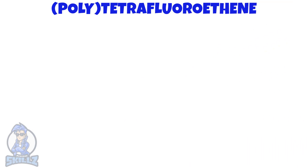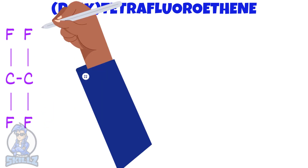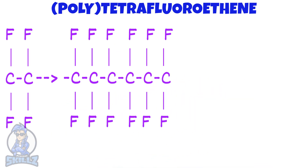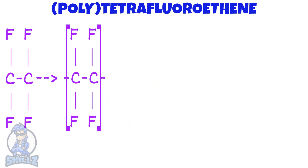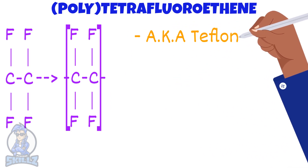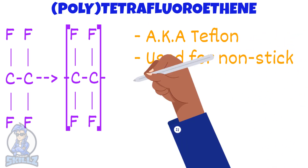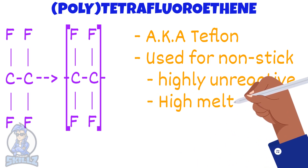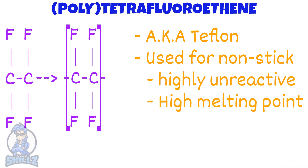Our final example will be with the monomer tetrafluoroethene. This is how tetrafluoroethene is displayed. A polymer of tetrafluoroethene is polytetrafluoroethene. It will look like this. Here is the repeat unit for polytetrafluoroethene. Polytetrafluoroethene is commercially known as Teflon and is used for non-stick coating on pots and pans. The reason PTFE is used for this is because it is highly unreactive and has a very high melting point.